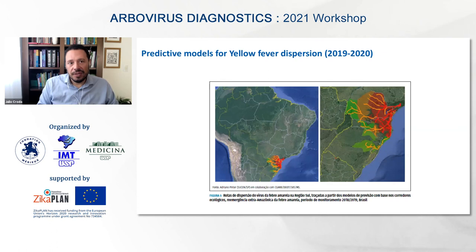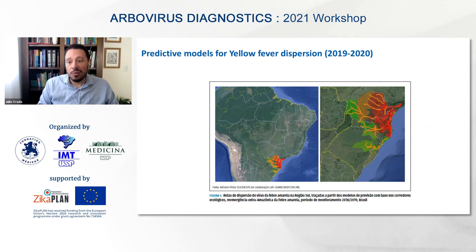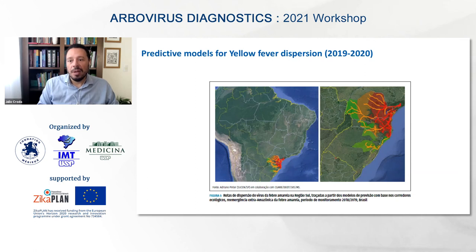The Ministry of Health, in partnership with Adriano Pinto from Instituto Pasteur São Paulo, developed a predictive model for yellow fever — modeling how the virus spreads, especially in relation to green areas and monkey populations. This model predicted that yellow fever would move from the southwest states like São Paulo and Minas Gerais toward the south, especially Santa Catarina, Paraná, and Rio Grande do Sul.